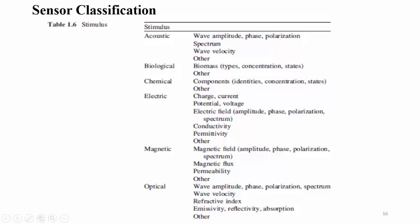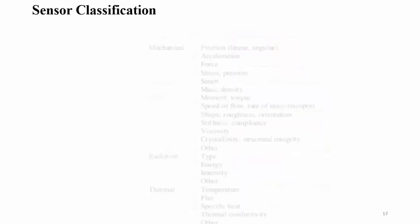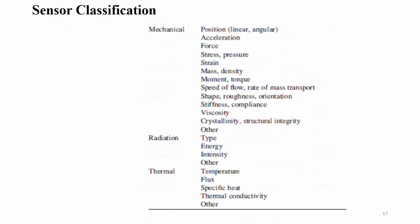For optical stimulus, amplitude, phase, and polarization can be sensed. Reflective index detection and variations in value are used to produce electrical output. Emissivity, reflectivity, and absorption-based concepts are considered for this particular type of optical sensor.